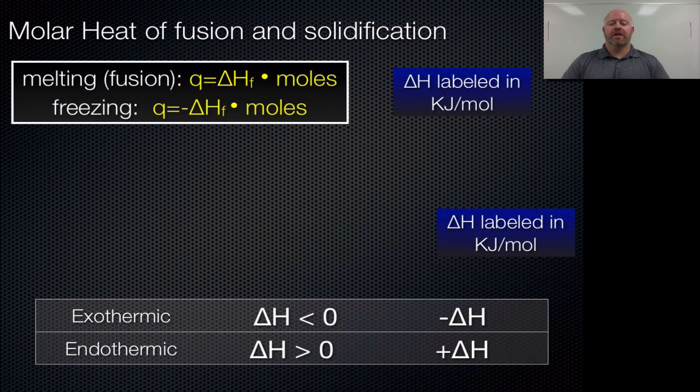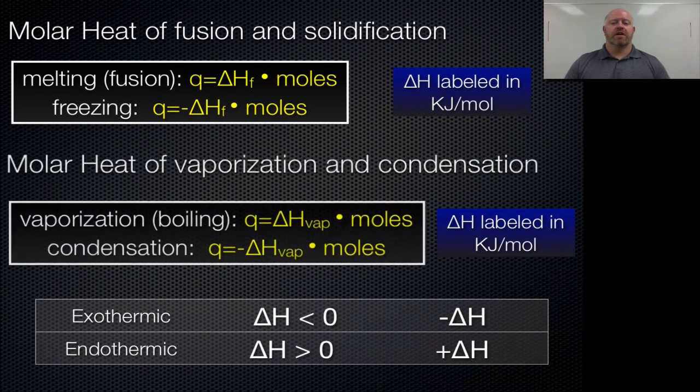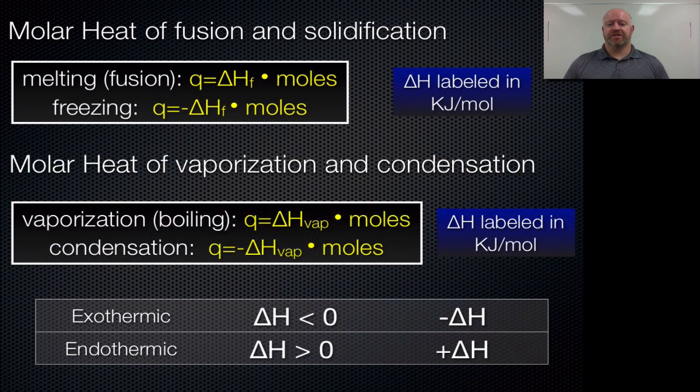So, what we want to start with is this idea of molar heats of fusion and solidification. We see here we have our delta H of F, so that's your enthalpy of fusion, which is basically melting, and we also have the enthalpy for solidification or freezing.